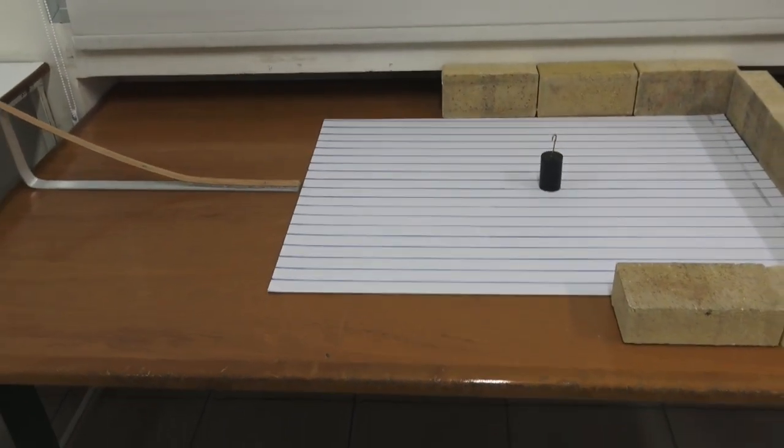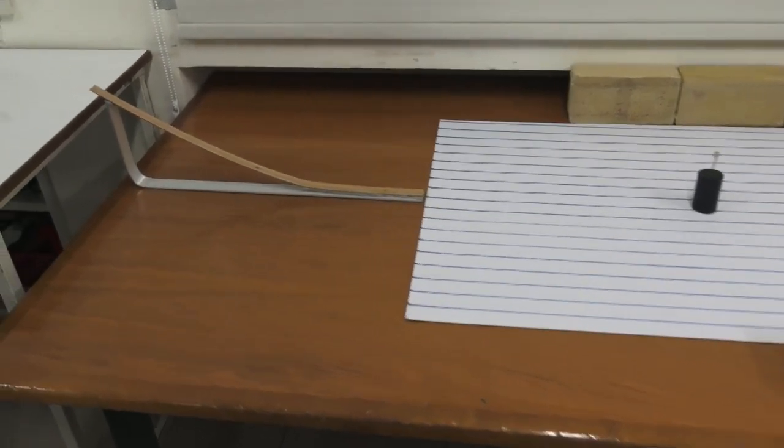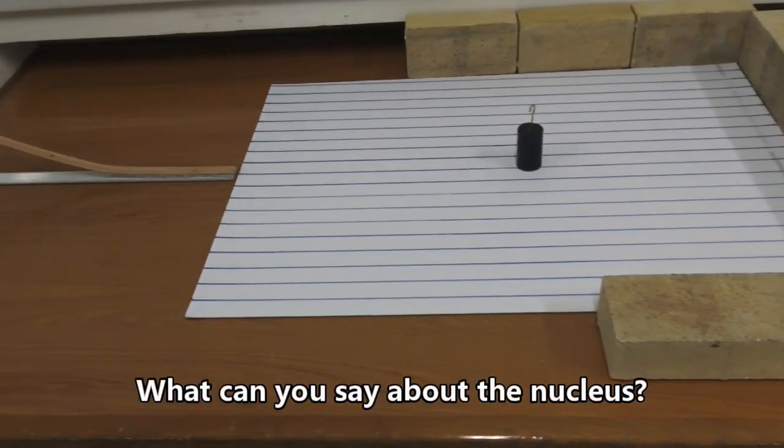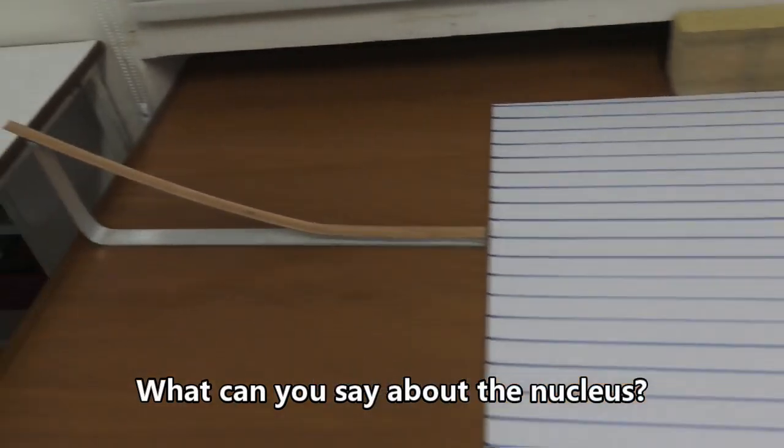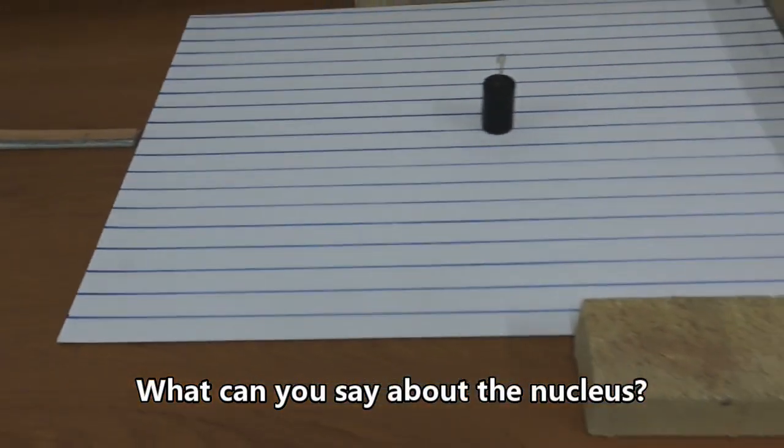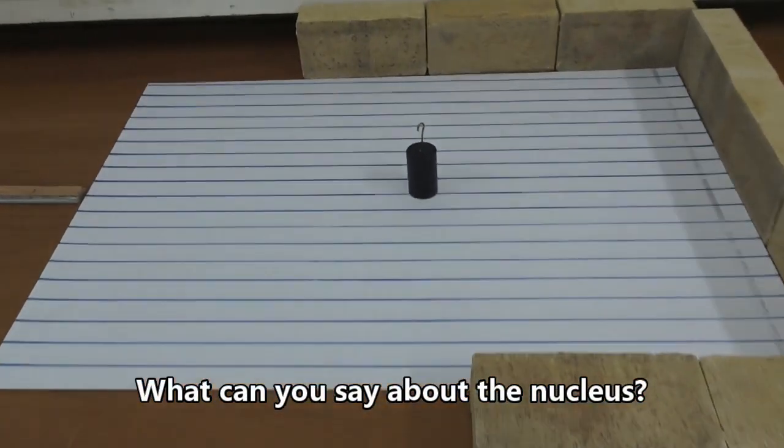How can we use the following equipment to model alpha particle scattering? We have a ramp down which we can roll a sphere. We have lined paper and we have a heavy black weight in the metal. So let's roll the sphere and see what happens.